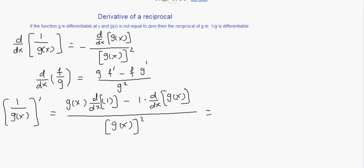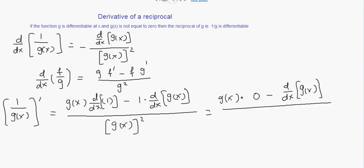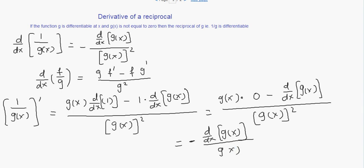This gives us g of x times d/dx of g of x, divided by g of x, which simplifies to d/dx of g of x divided by g of x squared. So that gives us 0 minus the derivative of the function g of x — there is a negative sign here — divided by the square of the function itself.